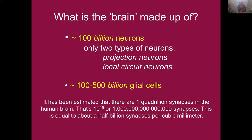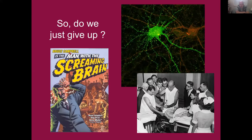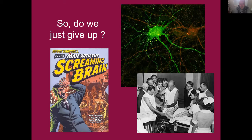We talked about the construction of neurons and glial cells and synapses in the human brain, and now we're going to talk a little bit about the complexity. Those little dots you see everywhere are connections from other neurons onto a single cell. The complexity of a quadrillion synapses is pretty overwhelming — so do we just give up? At one point we kind of started to. How do we figure out what it does?